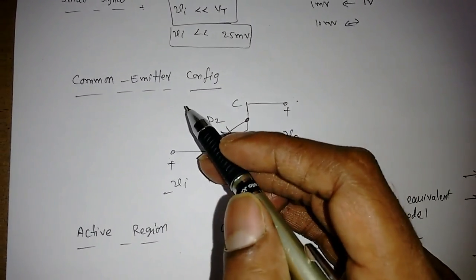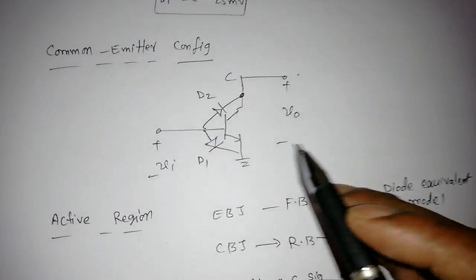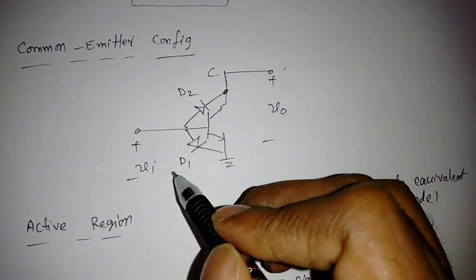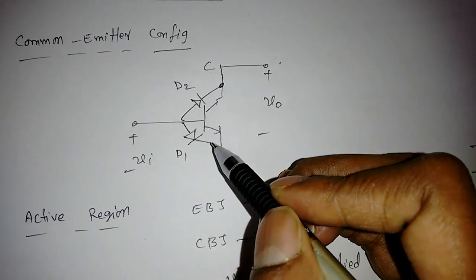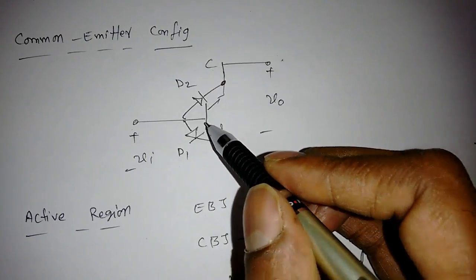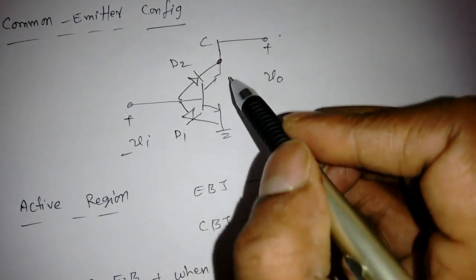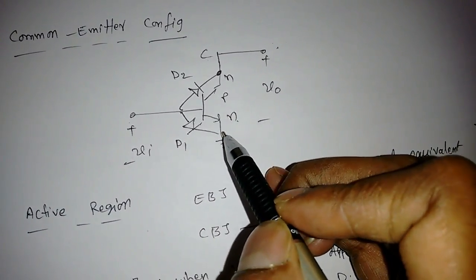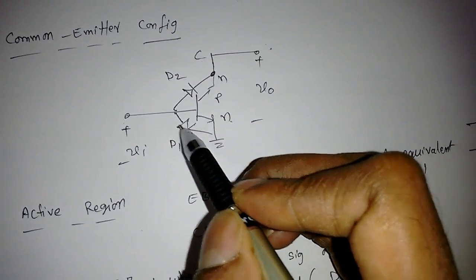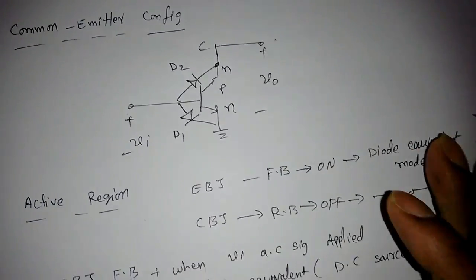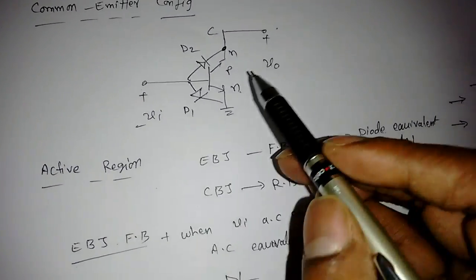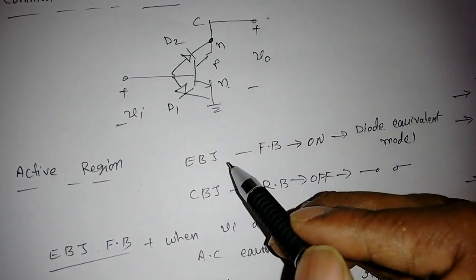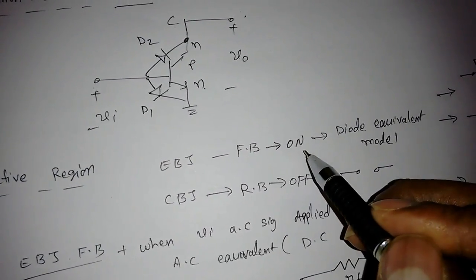First, we will take the common emitter configuration to find the small signal model, where the emitter is common to both collector and base. To draw the small signal model, we first draw the diode. For an NPN transistor there is an emitter-base junction and a collector-base junction. In the active region, when acting as an amplifier, the emitter-base junction should be forward biased — that is, ON.